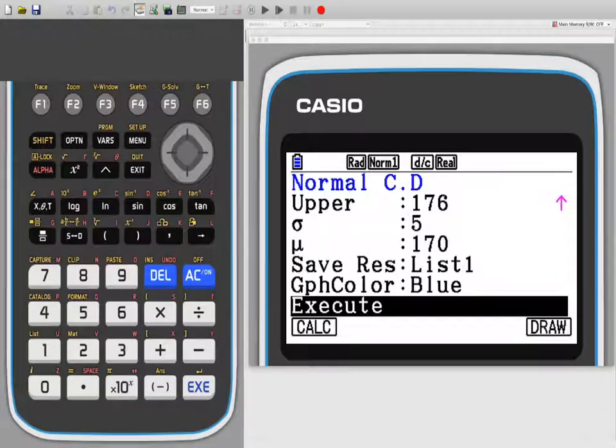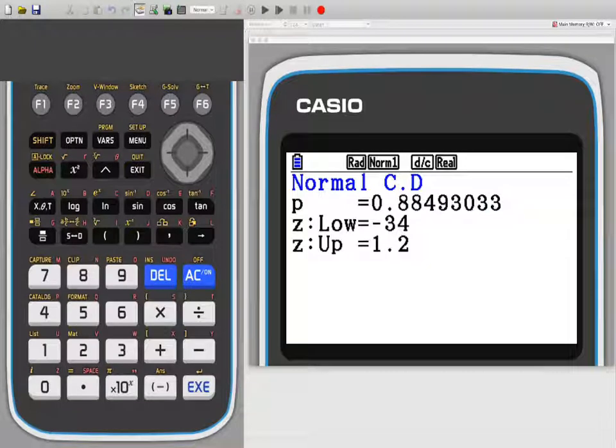If I exit that and do it as a calculation, so we press F1, I will just get the calculation of 0.884. We also get the Z values as well. We'll worry about that another time.